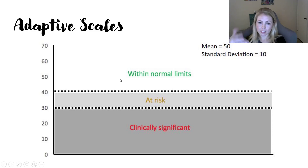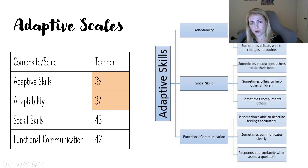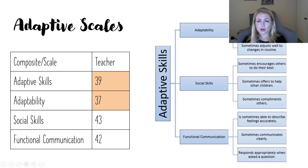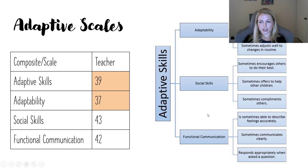On the adaptive scales, higher is better — higher is less problematic. He had some at-risk scores for adaptive skills overall. Adaptability, which is really coping with change, showed he's only sometimes easily calmed when angry, has trouble calming down, doesn't transition well — very common for kids with behavior problems and also kids with PTS. Social skills — 43 is in the average range, but the team wanted to point out he's sometimes doing these things, and those would be good anchors for intervention, trying to build up those skills to offset some of the difficulties.